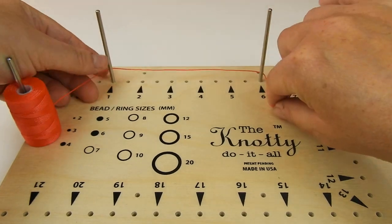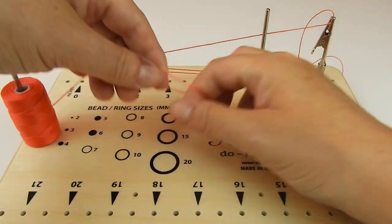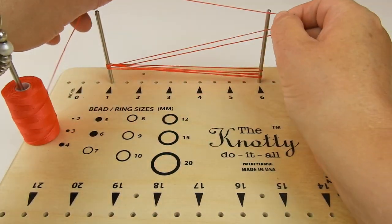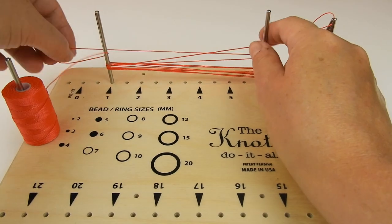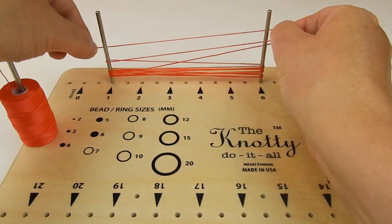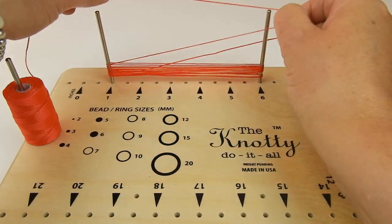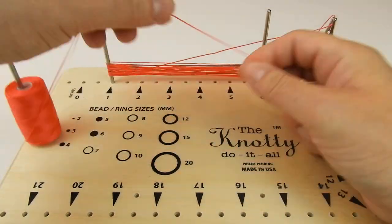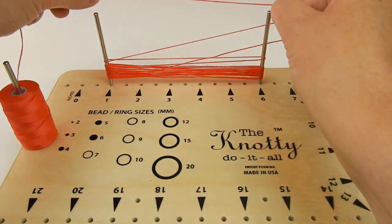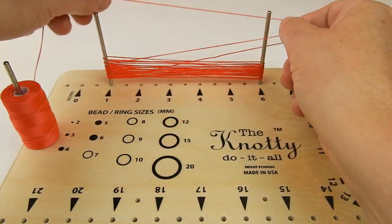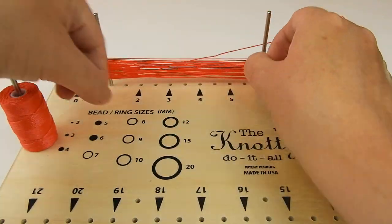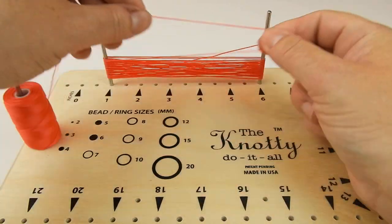Now we need to start to wrap this around here. This is what's going to cause the volume or create the volume of our tassel. How many times you go around depends on how thick your tassel will be, so this is something that you can think about at the end.